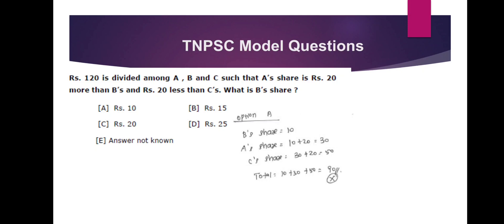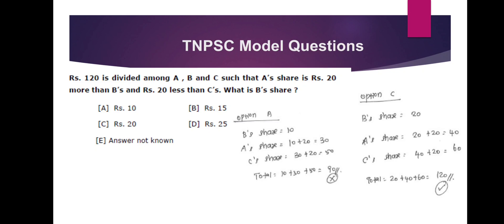A has to be 20. Do we have 20? Now option C — check the option. Option C: B is to 5, A is to 5, C is to 5.